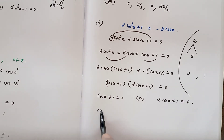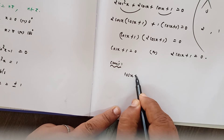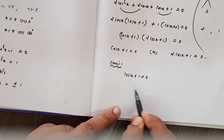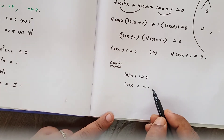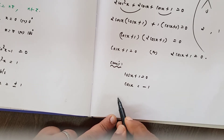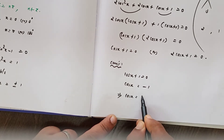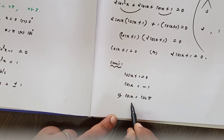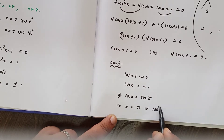Case 1: cosx plus 1 equals 0, which means cosx equals minus 1. We know cos 180° equals minus 1, so x equals π or 180 degrees. That is case 1.